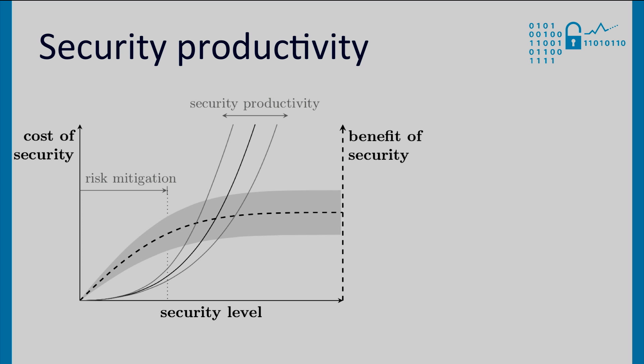The exponential shape of this function expresses that there are decreasing returns on investment. Simply put, spending more and more will get you a smaller and smaller improvement in security. The dashed line shows the second relationship — between security level and security benefits. How do the benefits evolve as the security level changes? This function also sees decreasing returns: after a certain point, further increasing the security level only provides marginal benefits.